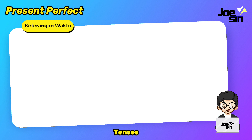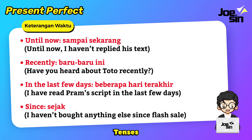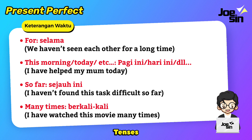Keterangan waktu present perfect tense. Ada beberapa keterangan waktu yang bisa kalian jadikan acuan. Yang pertama: until now — sampai sekarang. Contoh: until now I haven't replied his text. Lalu recently — baru-baru ini. Contoh: have you heard about Toto recently? Lalu in the last few days — beberapa hari terakhir. Contoh: I have read Pram's script in the last few days. Lalu since — sejak. Contoh: I haven't bought anything else since flash sale. Lalu for — selama. Contoh: we haven't seen each other for a long time — kita belum ketemu satu sama lain selama jangka waktu yang lama.